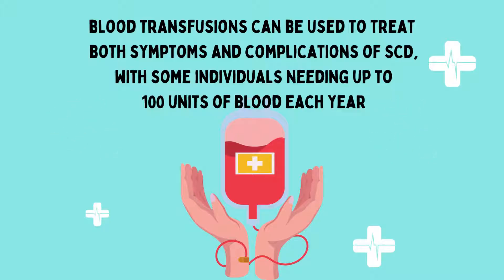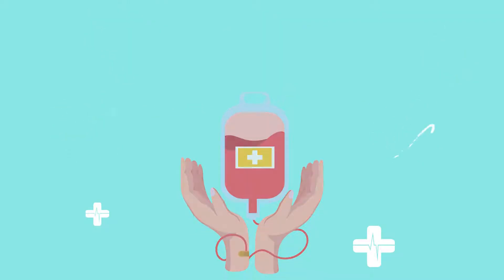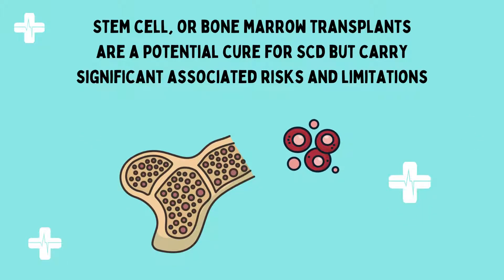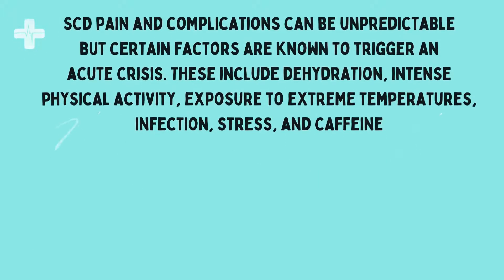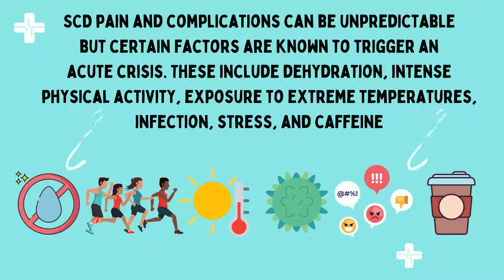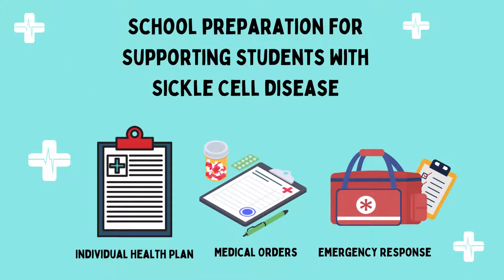Blood transfusions can be used to treat both symptoms and complications of sickle cell disease, with some individuals needing up to 100 units of blood each year. While stem cell or bone marrow transplants are a potential cure, they carry significant associated risks and limitations. Certain factors are known to trigger an acute crisis, including dehydration, intense physical activity, exposure to extreme temperatures, infection, stress, and caffeine.